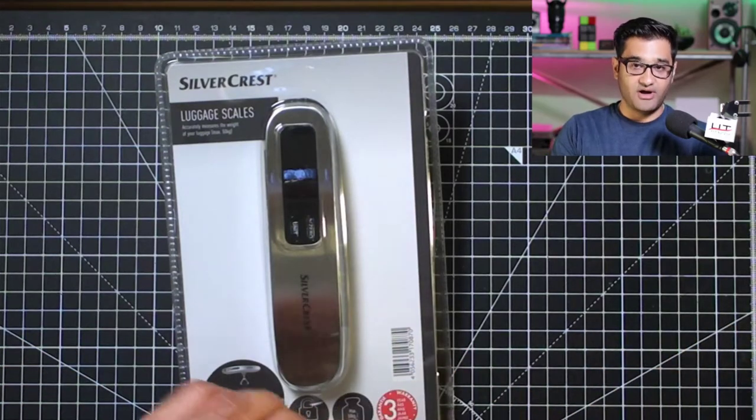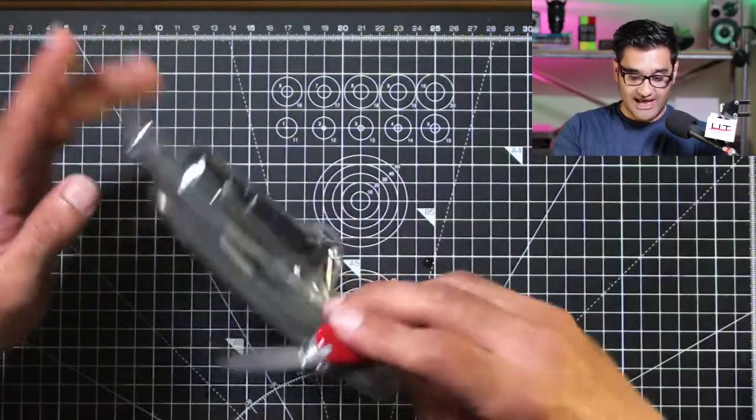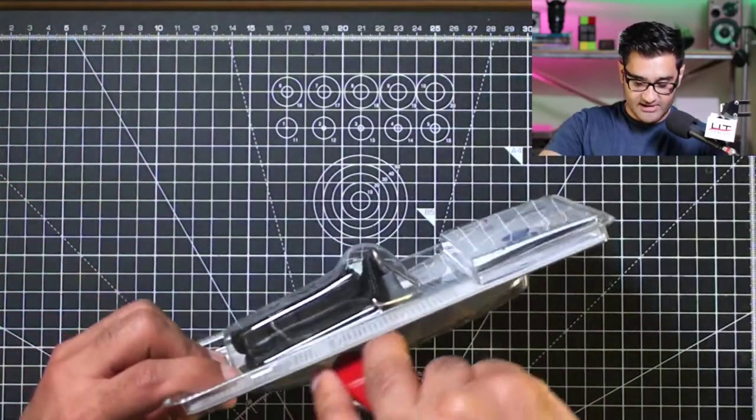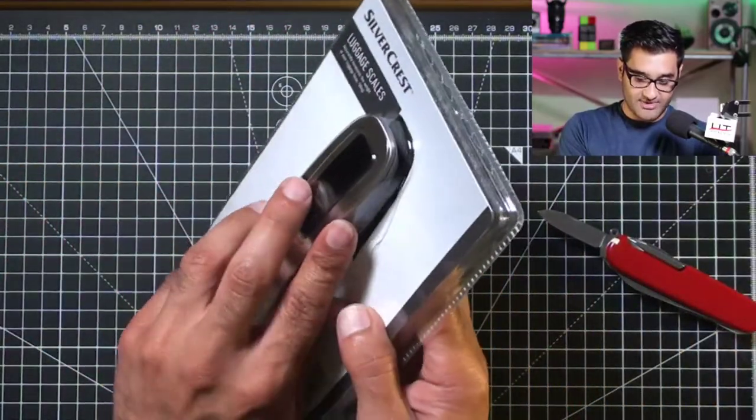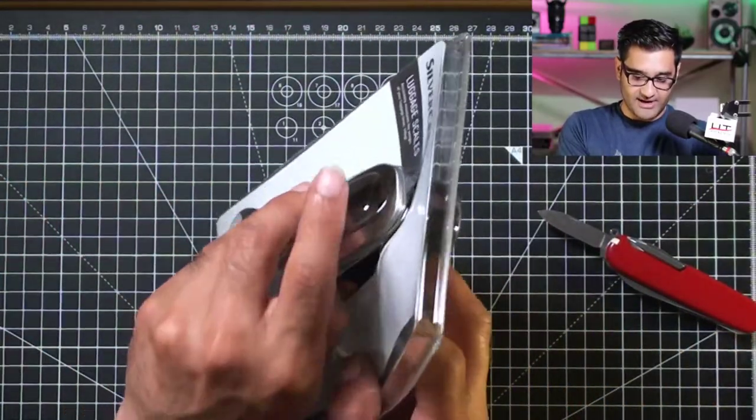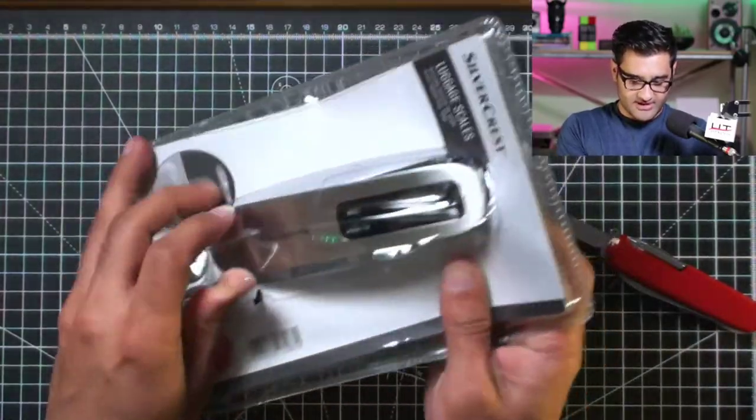If you're going on holiday, you know how much of a nightmare luggage can be. So these are luggage scales which actually allow you to easily weigh your own luggage. I'm going to quickly get it out of its packaging here so we can have a look at it. This plastic can be very hard. Let's get that out.